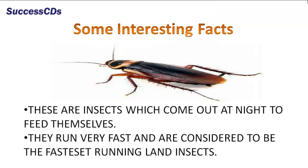Cockroaches are insects which come out at night to feed themselves. They run very fast and are considered to be the fastest running land insects.